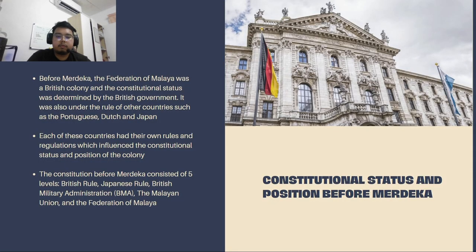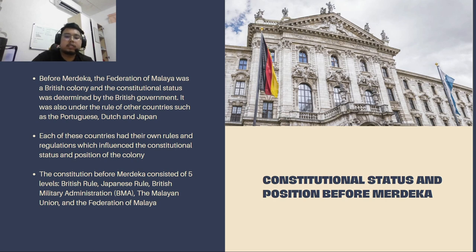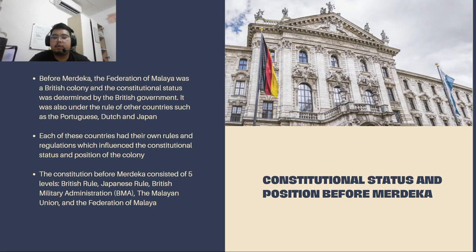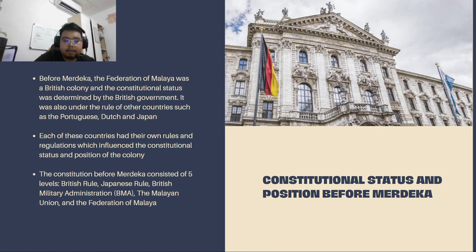Let's go to the second point, which is constitutional status and position before independence. Before Merdeka or independence day, the constitutional status and position was not really clear, as there were many countries that colonised the Federation of Malaya, such as the British, Portuguese, Netherlands and Japan, each with their own rules and regulations. Before Merdeka, there are five levels of constitutional development: the British rule, the Japanese rule, the British Military Administration, the Malayan Union, and the Federation of Malaya. Each had their own jurisdiction, and these periods influenced our constitution today.